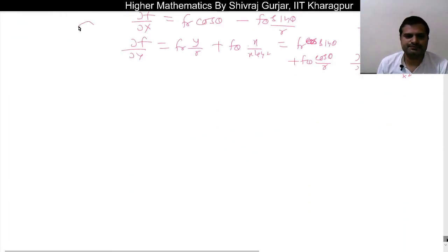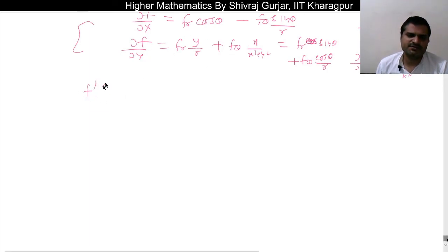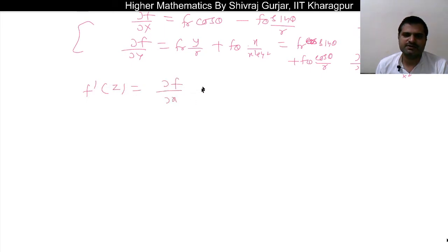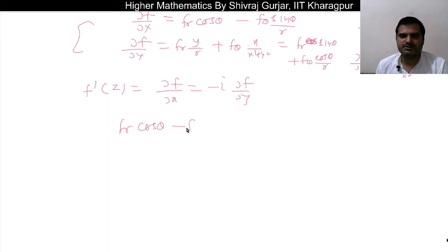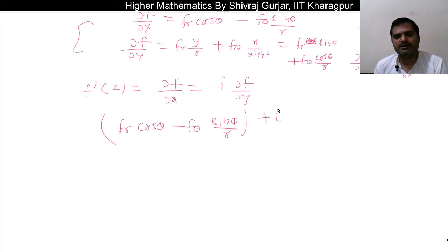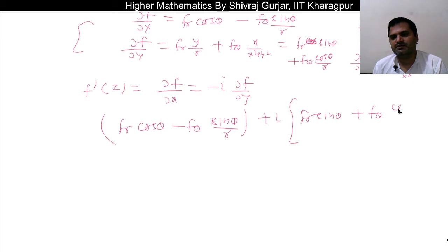Now we know that if f(z) is differentiable, then f'(z) is given by ∂f/∂x, which is also equal to −i · ∂f/∂y. So here we have: ∂f/∂x = f_r cos θ − f_θ sin θ/r, and ∂f/∂y = f_r sin θ + f_θ cos θ/r.